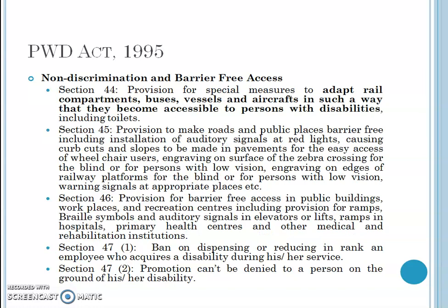The next section of this act deals with non-discrimination and barrier-free access for the disabled. Section 44 provides for special measures to adapt rail compartments, buses, vessels, and aircraft so that they become accessible to persons with disability, including the toilets at these places. Section 45 talks about provision to make roads and public places barrier-free, including installation of auditory signals at red lights — so that blind people who cannot see can follow signals through sound.